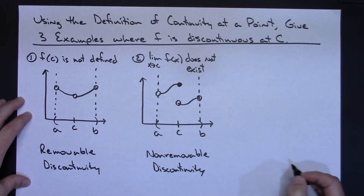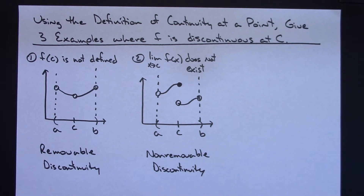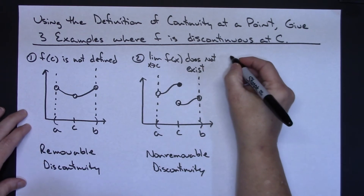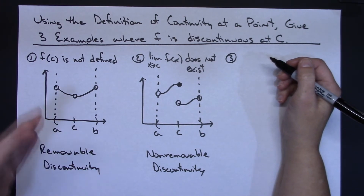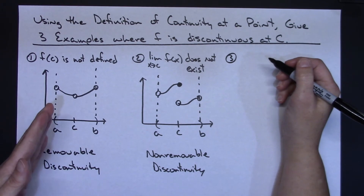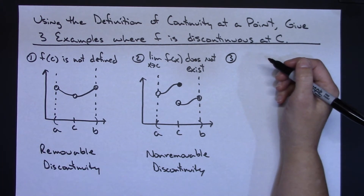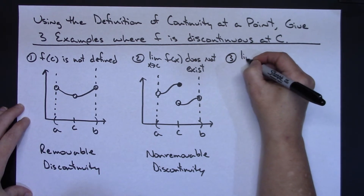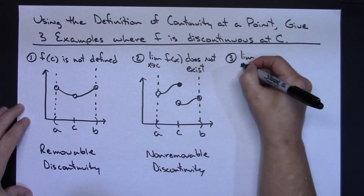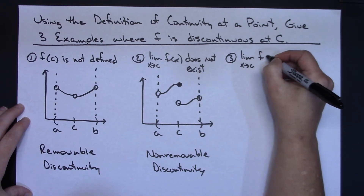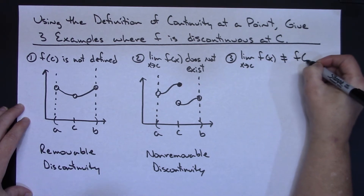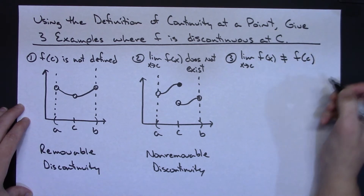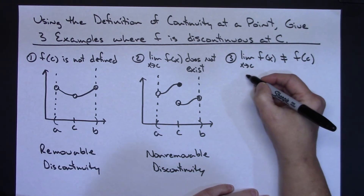For a third example of discontinuity at c, I take the third part of the definition which says the limit as x approaches c of f of x equals f of c. Well, if the limit as x approaches c of f of x does not equal f of c, then I would have a discontinuity occurring.